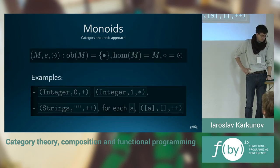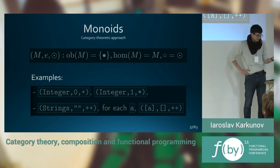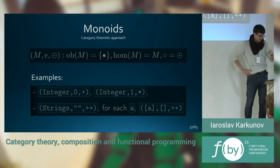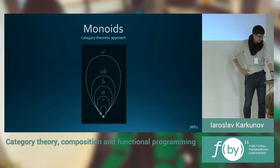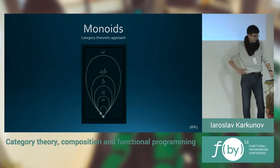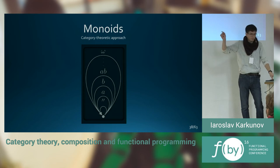From the category theoretic approach, it's just a singleton. And arrows are the set M, so all the integers, so all the strings. And composition is that binary operation. To make it more clear, there is a picture. It's a category of strings depicted on a diagram. It's just one object and infinitely many arrows pointing to that one object.